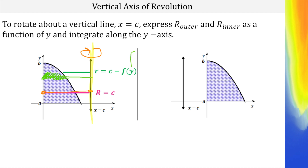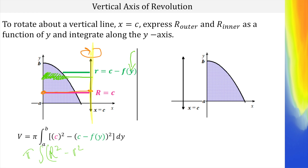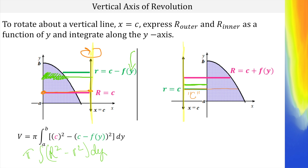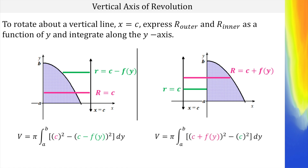The rest is the same: pi, then the integral, big R squared minus little r squared — this time dy. If the axis of rotation is to the left of the y-axis, then to find the big R, we need to get to the y-axis — a distance of c — and then keep going the height of the function: c plus f of y. The little r just needs to get to the y-axis, so that's a distance of c. Then we integrate as usual.